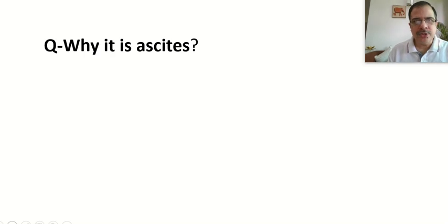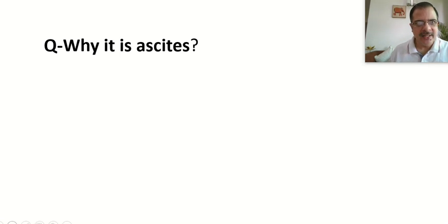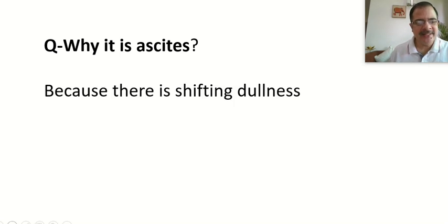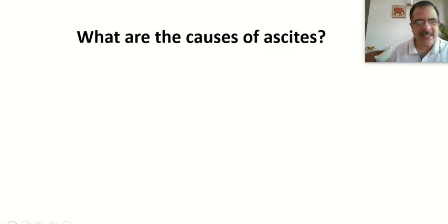A common viva question is: why is this abdominal distension ascites? The reason is there is a shifting dullness, confirming ascites. There is also a fluid thrill, so we can say with confidence that it is a case of ascites.